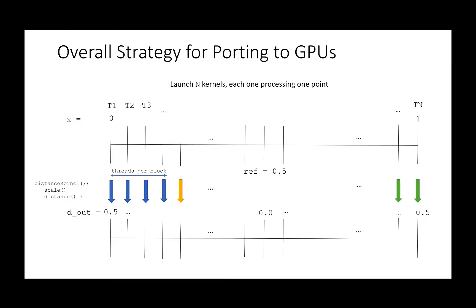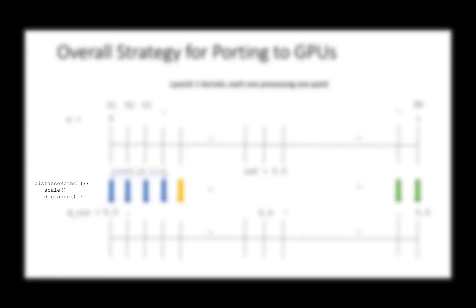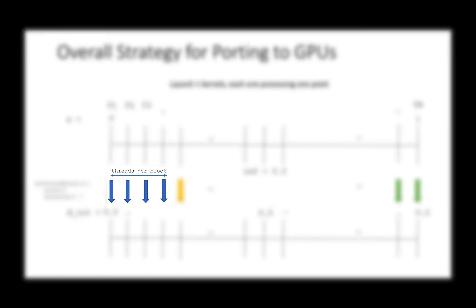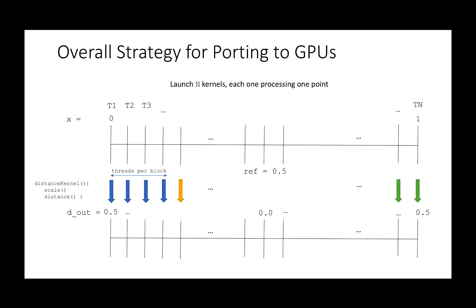We will see that the CUDA implementation will eliminate these for loops by using a block grid. These slides present a basic strategy to use CUDA to solve this problem. We have n points to process, so we will launch n threads, each one carrying out the scale and the distance operation in parallel. In CUDA, we provide the number of blocks and threads per block to set the total number of threads. Typically, the number of threads per block (tpb) is fixed to a multiple of 32. So we fix tpb and calculate the number of blocks as n divided by tpb, as we want one thread per each grid point.